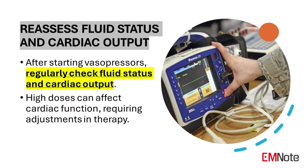Reassess Fluid Status and Cardiac Output. After initiating vasopressor therapy, it's crucial to continually reassess the patient's fluid status and cardiac output. High doses of vasopressors can impact cardiac function due to increased afterload or reduced myocardial perfusion. Regular monitoring allows for timely adjustments to both fluid management and vasopressor dosing, ensuring optimal hemodynamic support while minimizing potential adverse effects.